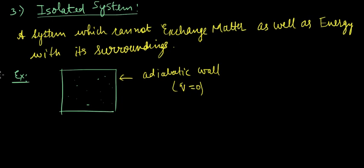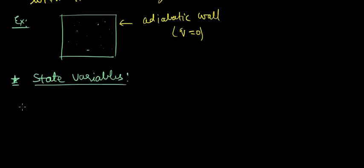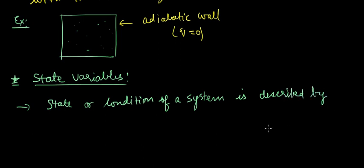Next, let us look at state variables. A state or condition of a system is described by certain measurable properties, and these measurable properties are called state variables. Examples of state variables include temperature, pressure, and volume.